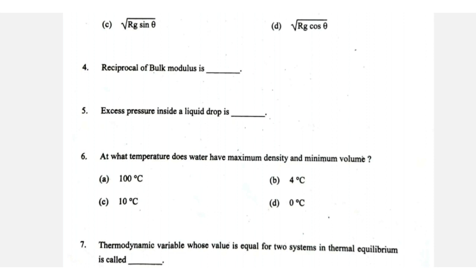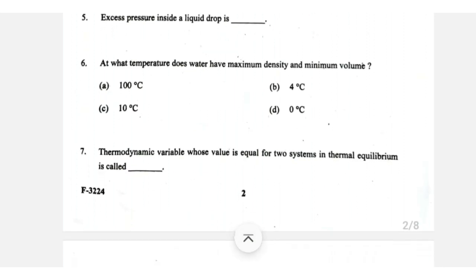What temperature does water have maximum density and minimum volume? Maximum density and minimum volume occur at 4 degrees Celsius.